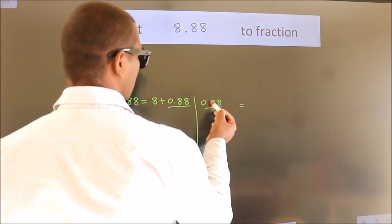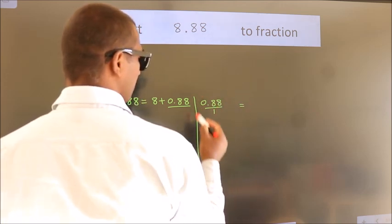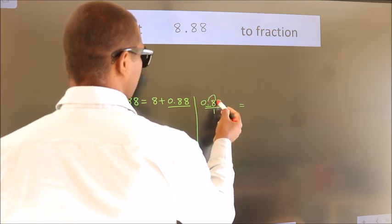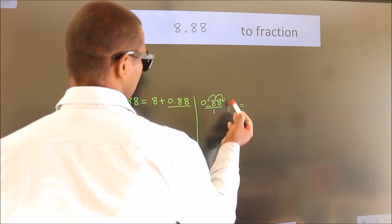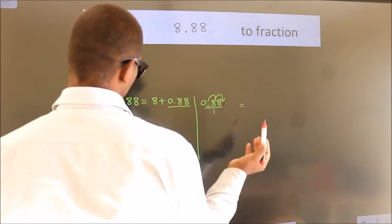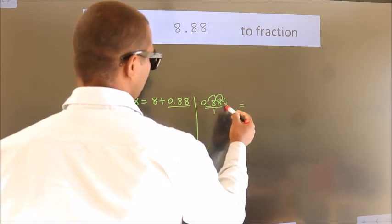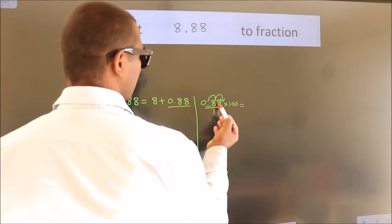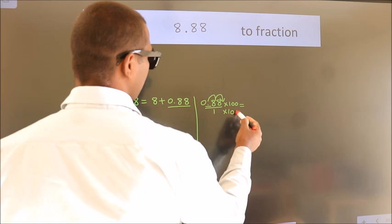To convert this to fraction, we have to move this decimal after two numbers. For that multiply it with 100. Whatever you are multiplying in the numerator, in the denominator also do the same.